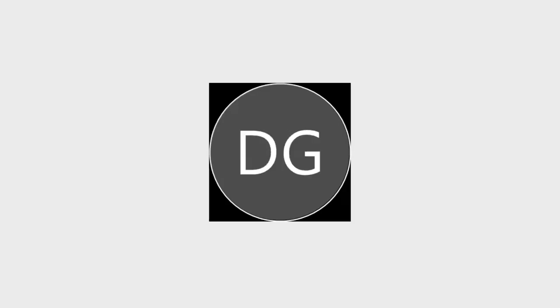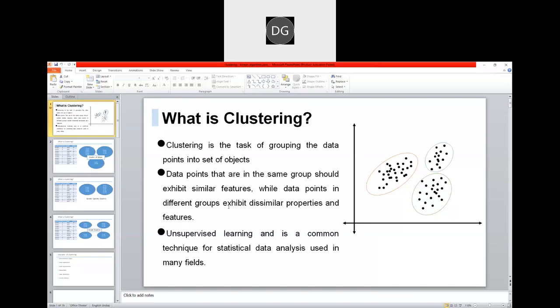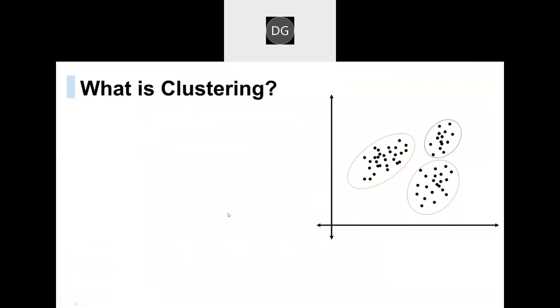So for a new fruit, it can only segregate whether it belongs to cluster one or cluster two, or group one or group two. The term we use for grouping data points is known as clustering.